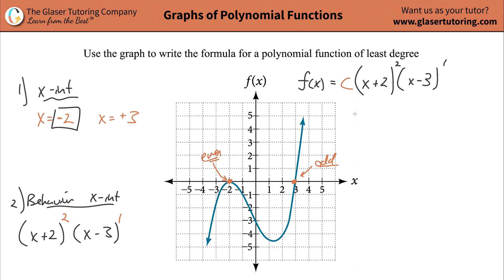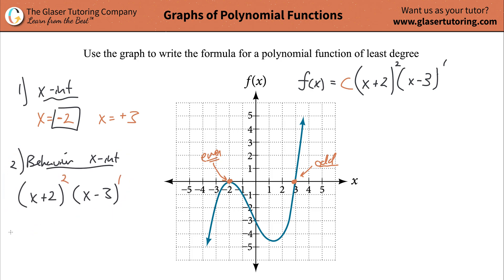Last but not least, we find the c value. If you want to understand why evens bump and odds cross, there's a video explaining that in detail — I want you to understand it, not just memorize. To find c, we first need to find the y-intercept. It looks like the y-intercept is at negative 3, so y equals negative 3. Every y-intercept has an x value of 0, so the point is (0, negative 3).